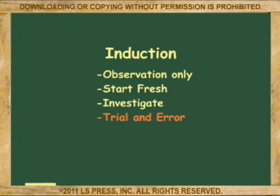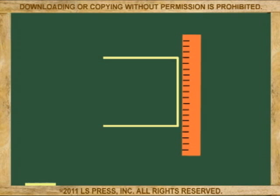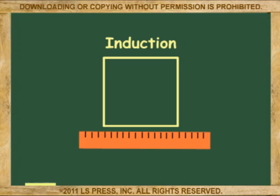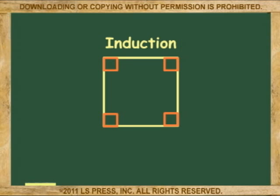In induction, for example, if a figure has four sides, we measure the sides and angles before accepting it as a square. We call it induction because it comes from our own generalizations and not from an outside source.